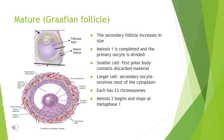The secondary follicle increases in size and becomes a mature follicle, known as the Graafian follicle. At this stage and just before ovulation, the primary oocyte completes meiosis 1 and divides into two haploid cells of different sizes. The smaller cell is the first polar body containing discarded material, which degenerates over time. The larger cell is the secondary oocyte and receives most of the cytoplasm. Each has 23 chromosomes, and meiosis 2 begins and stops at metaphase 2.